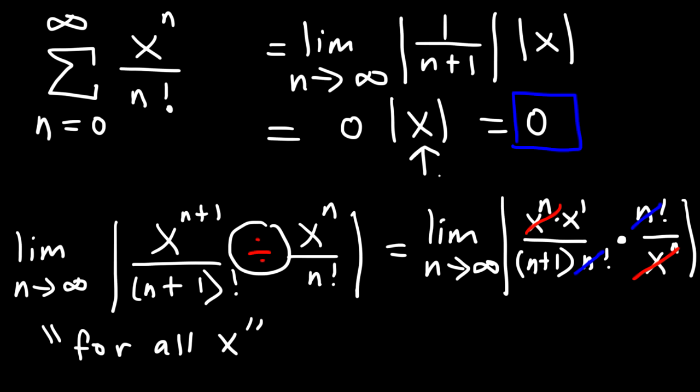Regardless of what x is — 20, 1000, negative 50 — if you multiply by 0, it's going to be 0. So the series converges for all x values. The radius of convergence is infinity, and the interval of convergence is negative infinity to infinity.